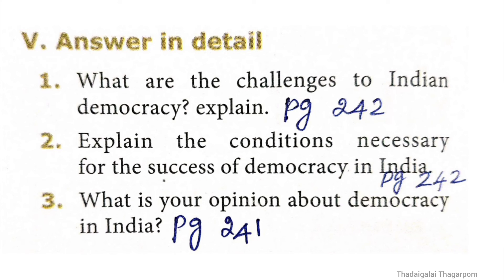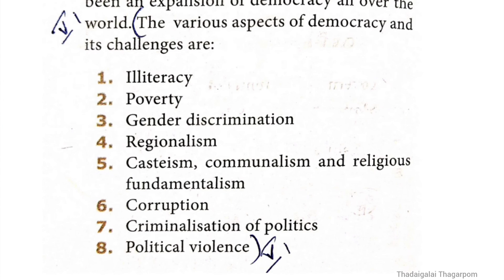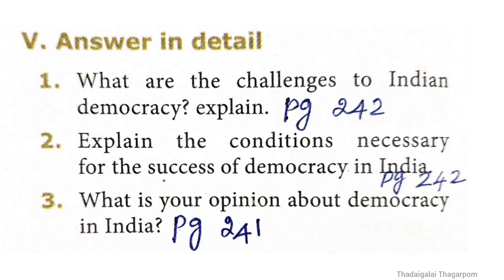Roman numeral five: answer in detail. First question: what are the challenges to Indian democracy? The answer is on page number 242, right-hand side, from the fourth line. The various aspects of democracy and its challenges include illiteracy, political violence, and other points listed in that section. Second question: explain the conditions necessary for the success of democracy in India.